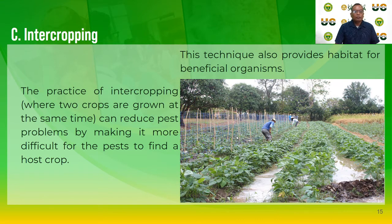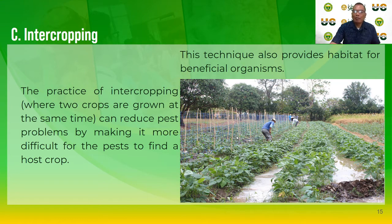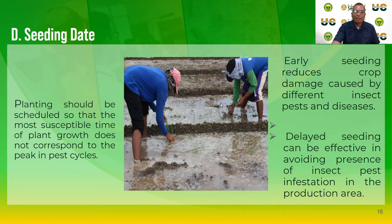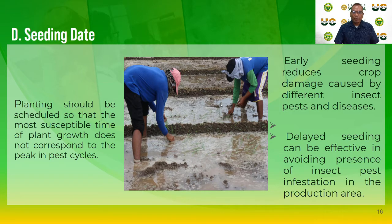Intercropping — the practice of growing two crops at the same time — can reduce pest problems by making it more difficult for pests to find a host crop. This technique also provides habitat for beneficial microorganisms. Another technique is seeding date: planting should be scheduled so that the most susceptible stage of plant growth does not correspond to the peak of pest cycles. Early seeding reduces crop damage caused by different insect pests and diseases, while delayed seeding can be effective in avoiding insect pest infestations in the production area.